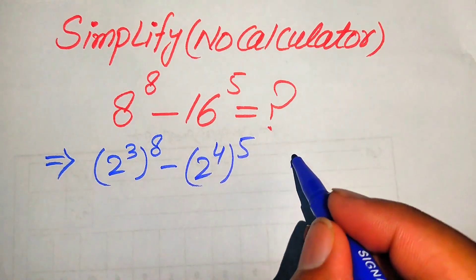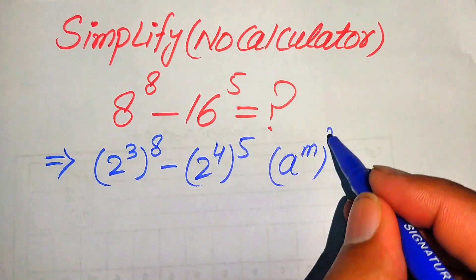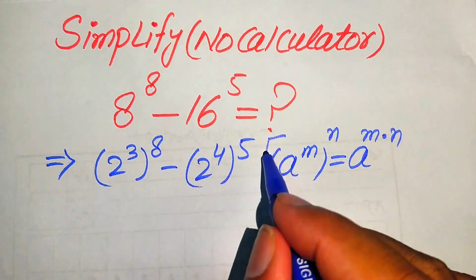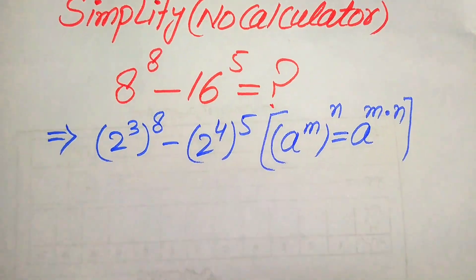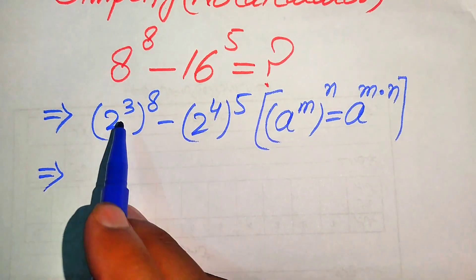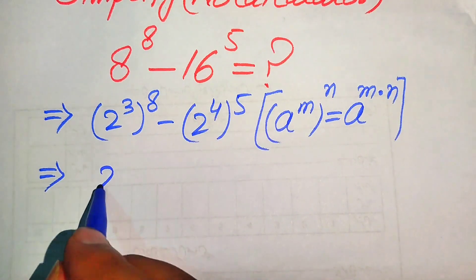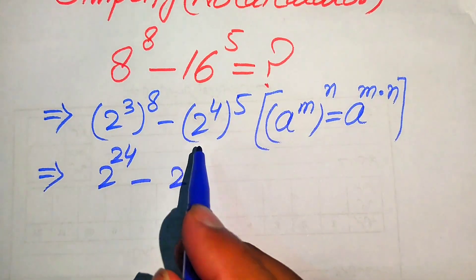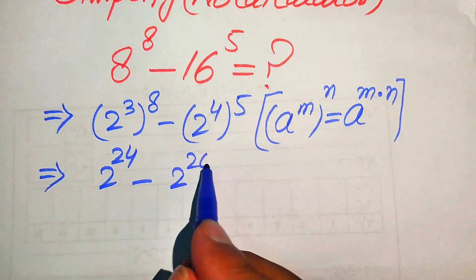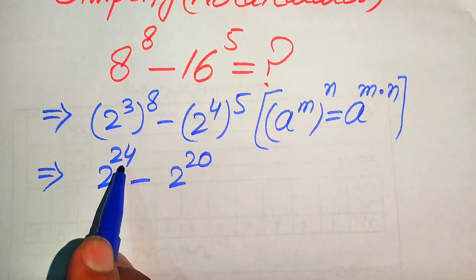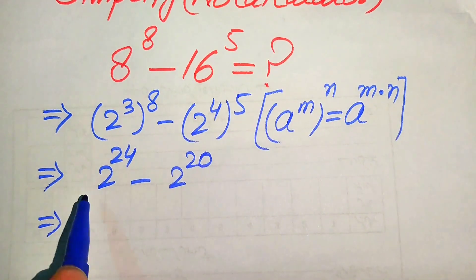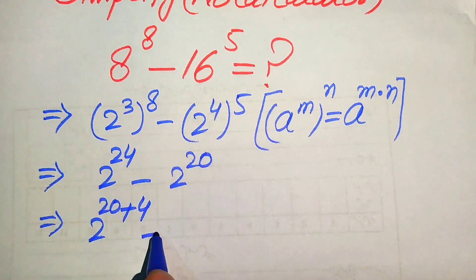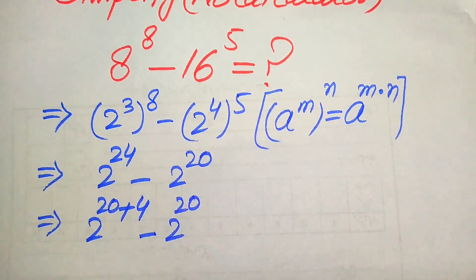Here we use the exponent law: if we have a to the power of m, to the power of n, it equals a to the power of m multiplied by n. According to this law we multiply the exponents: 3 times 8 becomes 24, minus 4 times 5 equals 20. Now we break 24 and write 2 to the power of 20 plus 4, minus 2 to the power of 20.